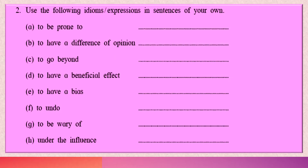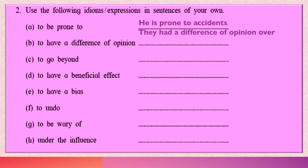Question 2: Use the following idioms or expressions in sentences of your own. 'To be prone to' means to be liable to — for example, 'He is prone to accidents.' 'To have a difference of opinion' means not to agree with someone — for example, 'They had a difference of opinion over who would speak first.' 'To go beyond' means to do something more — for example, 'He went beyond the set limits when he slapped his elder brother.'